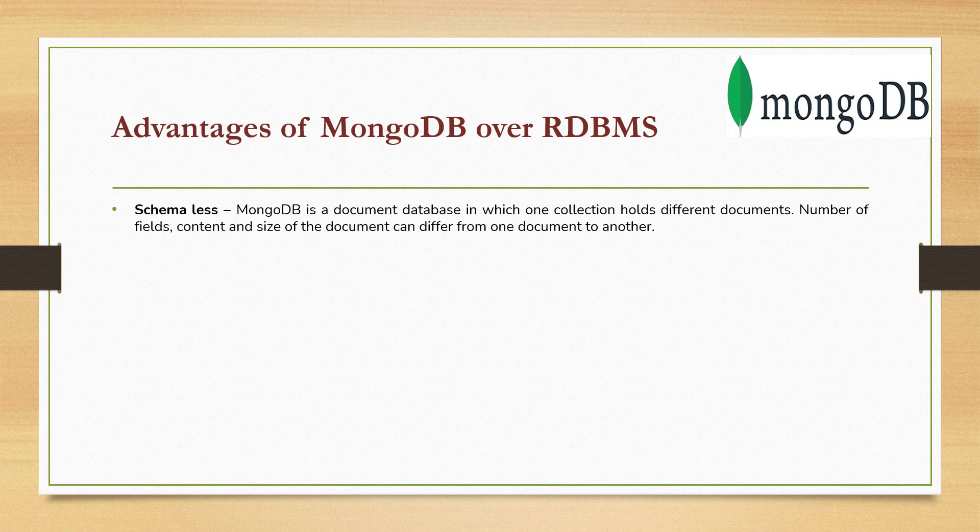The first advantage of MongoDB is that it is completely schema-less. MongoDB stores data as a document — as a JSON document. One collection in MongoDB is like a table in SQL, and a collection can hold multiple documents. The number of fields and the size of a document can differ from one document to another. That's the beauty of MongoDB.